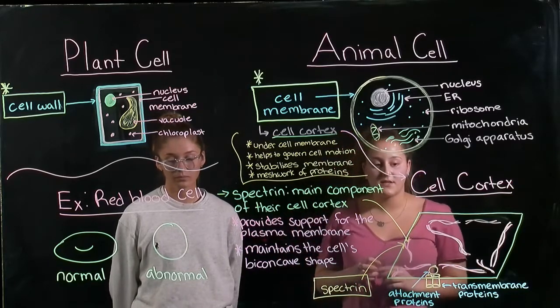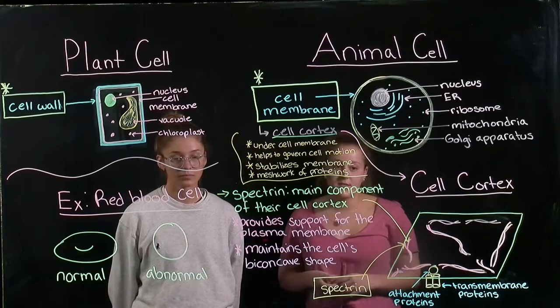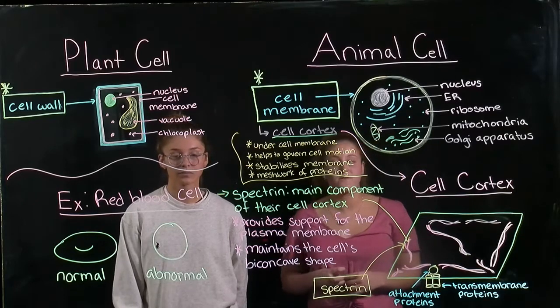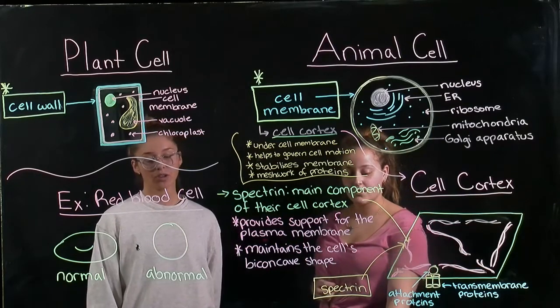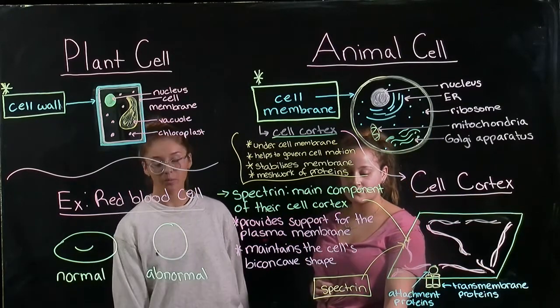The importance of this meshwork is seen in mice and in humans that produce a form of spectrin that is abnormal. These people with an abnormal spectrin structure are anemic due to a lack of red blood cells.